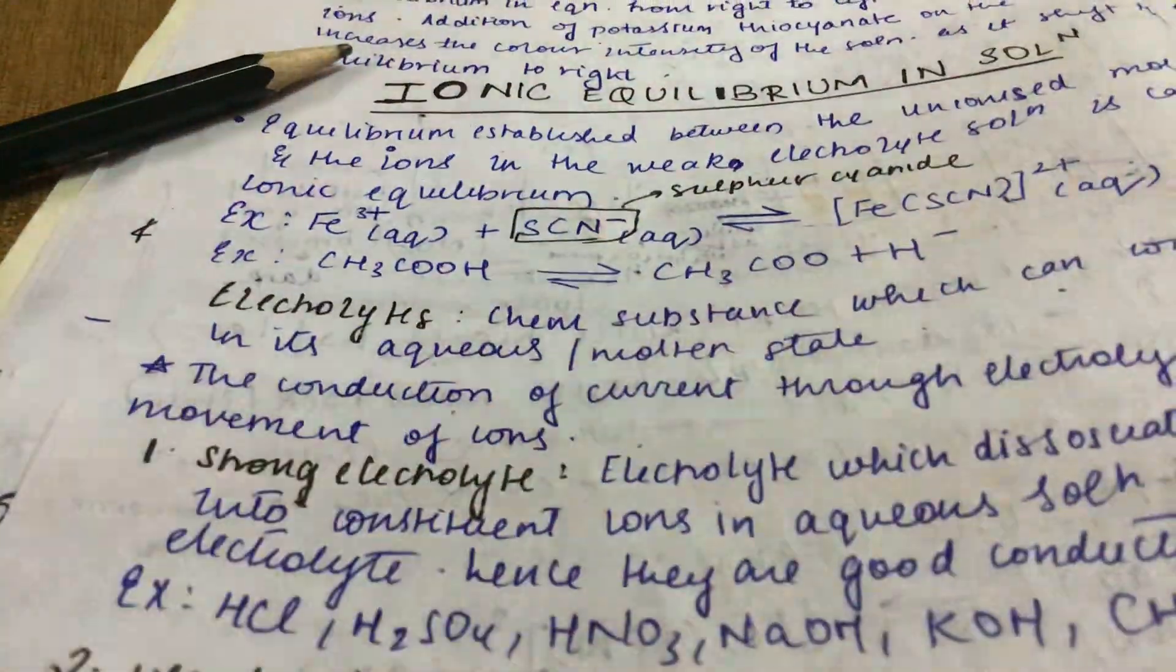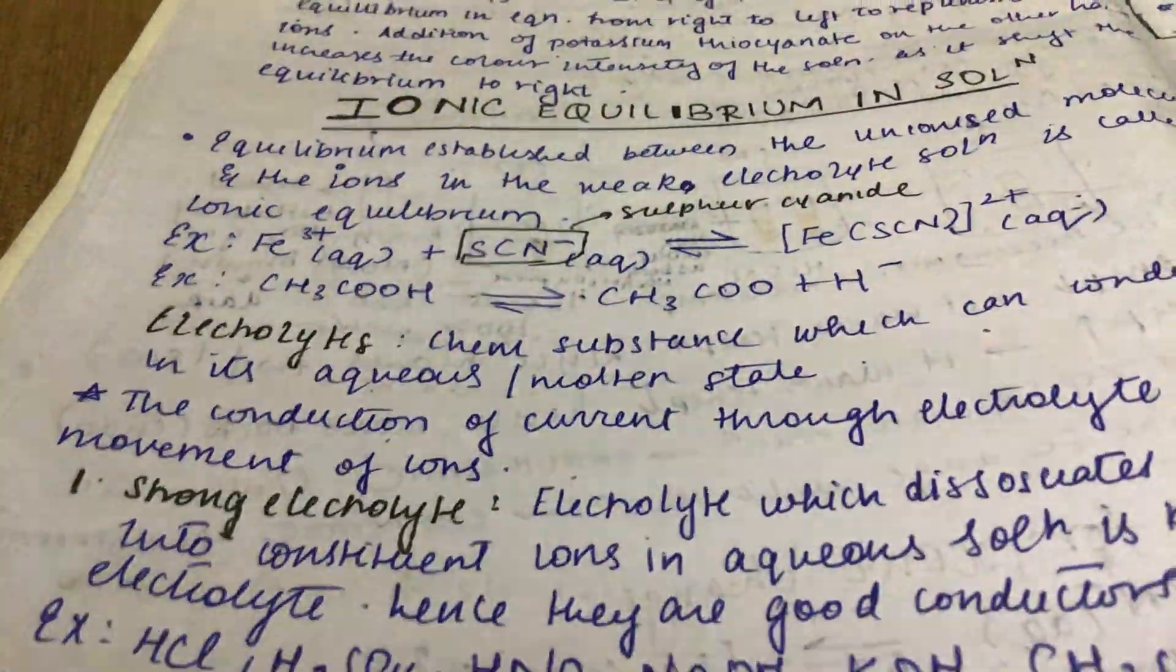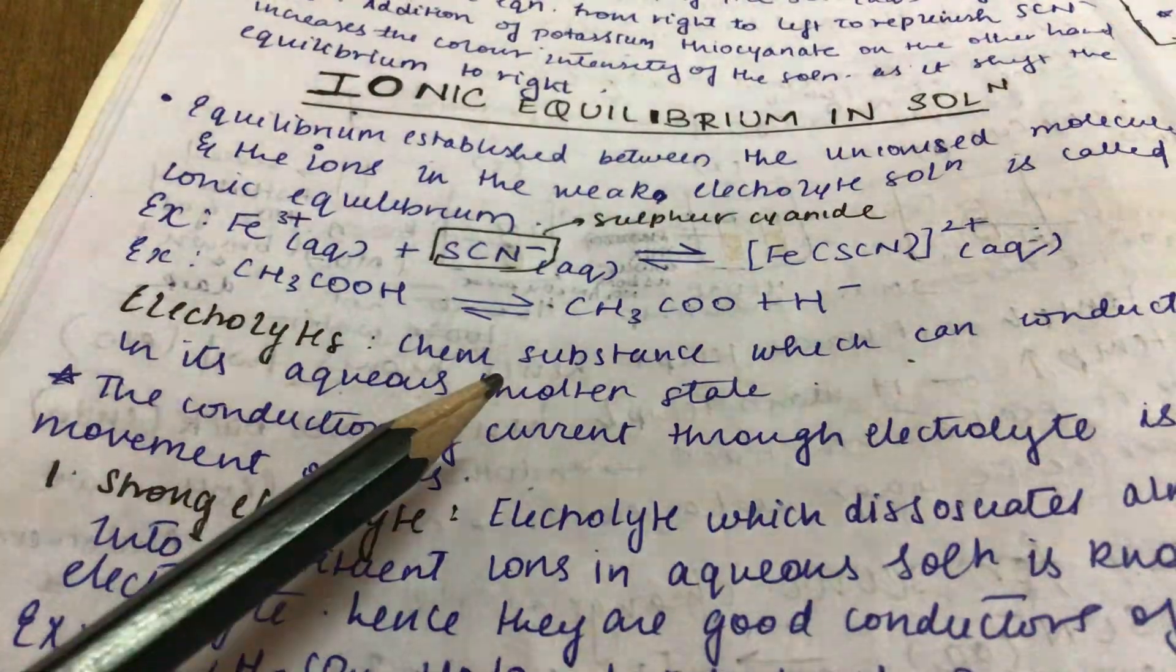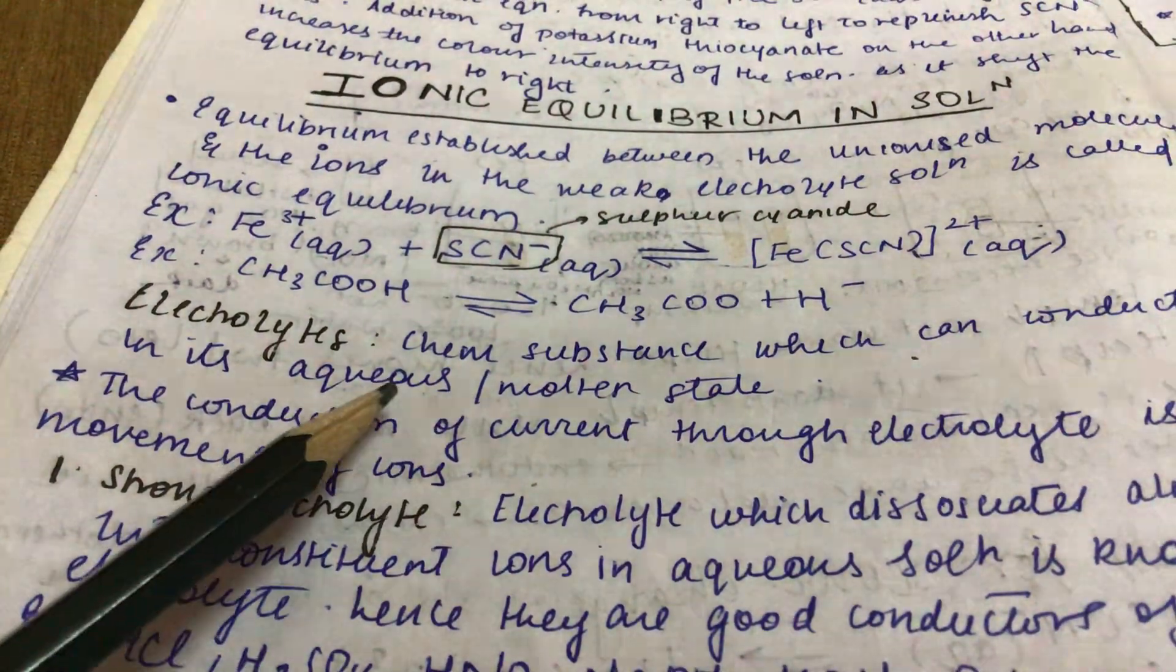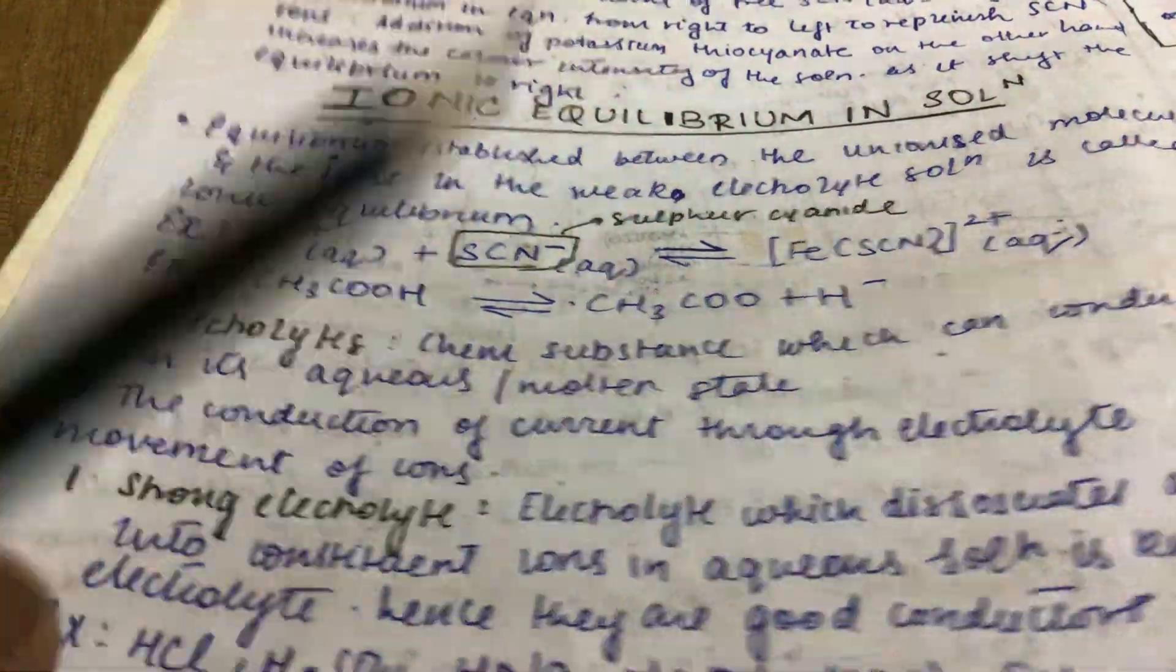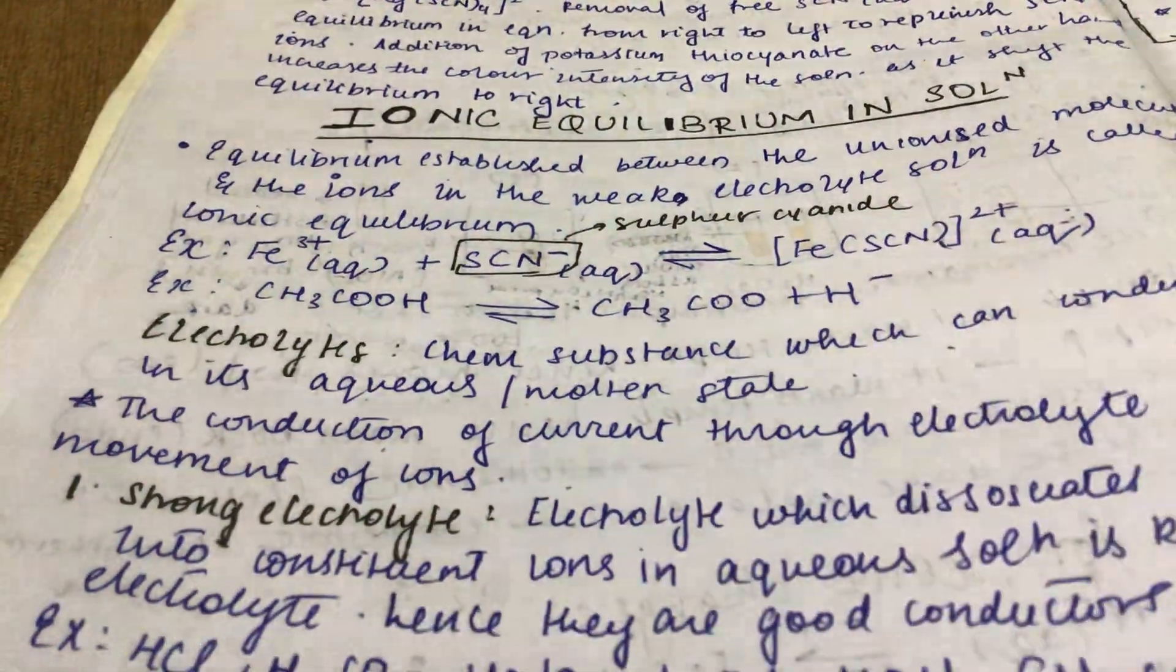Electrolyte is a chemical substance which can conduct electricity in its aqueous or molten state. The conduction of current through electrolyte is due to movement of ions. Because its ions move, that's why it conducts electricity.